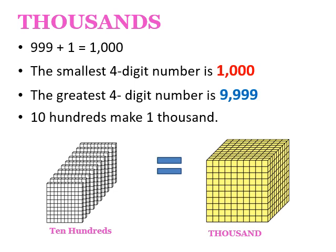How do we form a thousand? When we combine 10 hundreds, it makes 1,000. The picture on your screen explains it: 1 flat of 100 has 100 cubes in it. So if we stack 10 flats of 100 together, it will form a block of 1,000.